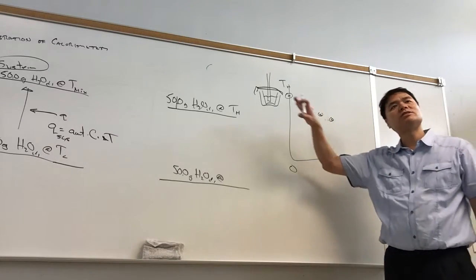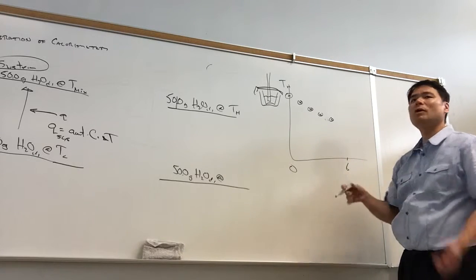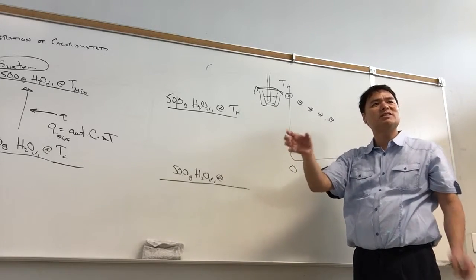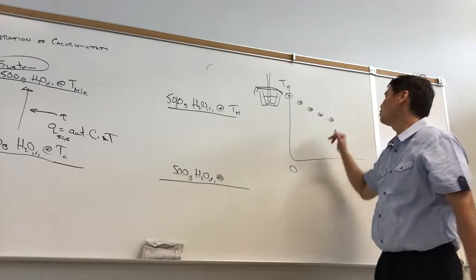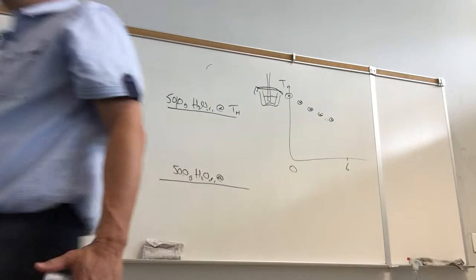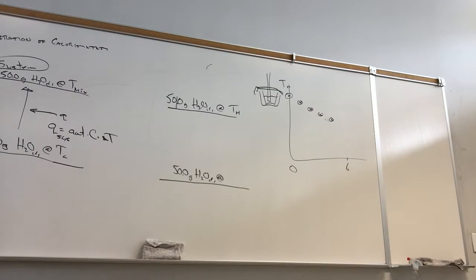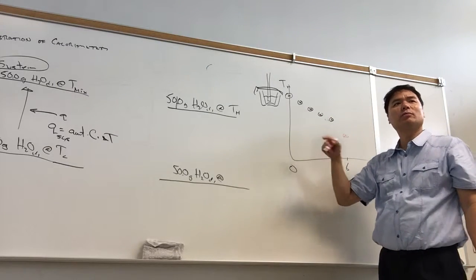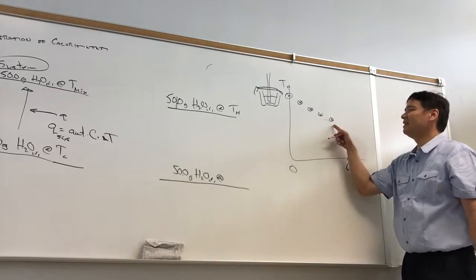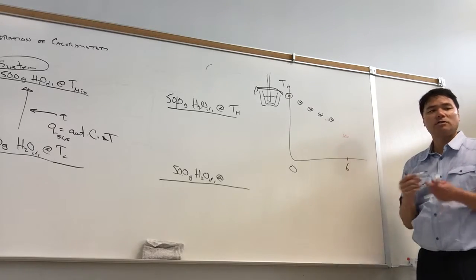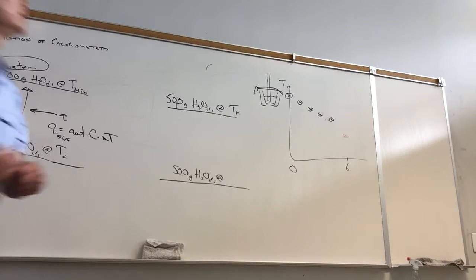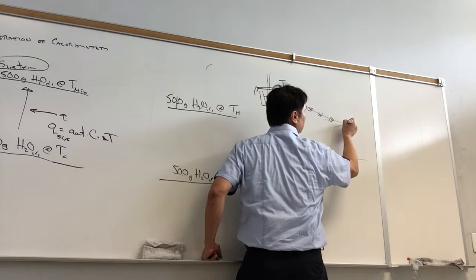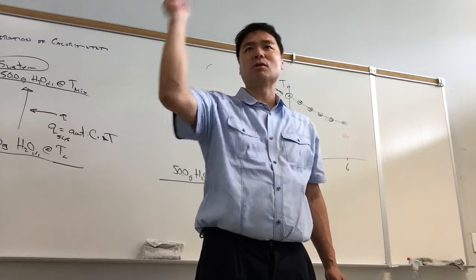Once we have the cooling curve, we can predict what the temperature should be. At around minute six, we pop the lid and pour in the cold water. We won't take an actual measurement at minute six because we're pouring — the thermocouple reads air and those readings are misleading. So we draw the best-fit curve and extrapolate what the temperature should have been at minute six. That extrapolated point is T-hot at the time of mixing.